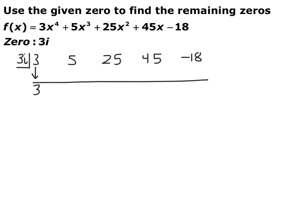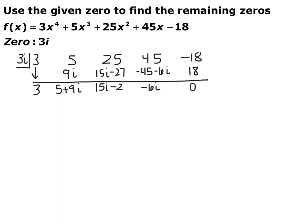We have 3i times 3, giving 9i. We add to get 5 plus 9i — we can't combine 5 and 9i since they're not like terms. Then 3i times 5 is 15i, and 3i times 9i is 27i squared, which is negative 27. Continuing the synthetic division: adding gives 15i minus 2, then multiplying by 3i gives negative 45 minus 6i — remember to change the sign because of i squared. Adding, the 45s cancel and you get negative 6i; multiply by 3i to get positive 18, and the remainder is 0, confirming 3i is a zero.